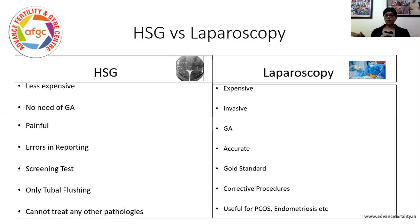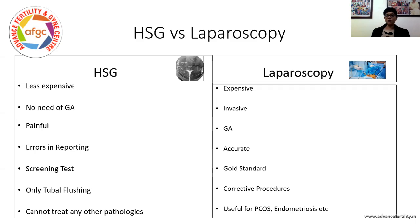You cannot treat any other pathologies with non-laparoscopic tests, which can be done in a laparoscopy. A laparoscopy is expensive, is invasive, and is done under anaesthesia, but it is accurate and gold standard. Corrective procedures for mild to moderate tubal problems can be done, and it is useful for other conditions like polycystic ovaries — you can do ovarian drilling — endometriosis, and cystectomy. So I'm a big fan of laparoscopy where it can be done.